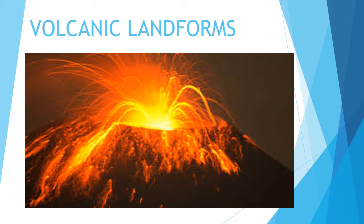Hello everyone. After studying the volcanic eruption in detail, now we are going to study the different landforms which are created after the volcanic eruption. Whenever a volcanic eruption takes place, large amounts of material come out from the earth's crust. Initially it is very hot, but later as it cools down it becomes lava, which has the quality of rock and gets converted into sedimentary rocks. These rocks create different landforms, and the land looks different compared to how it looked before the volcanic eruption.